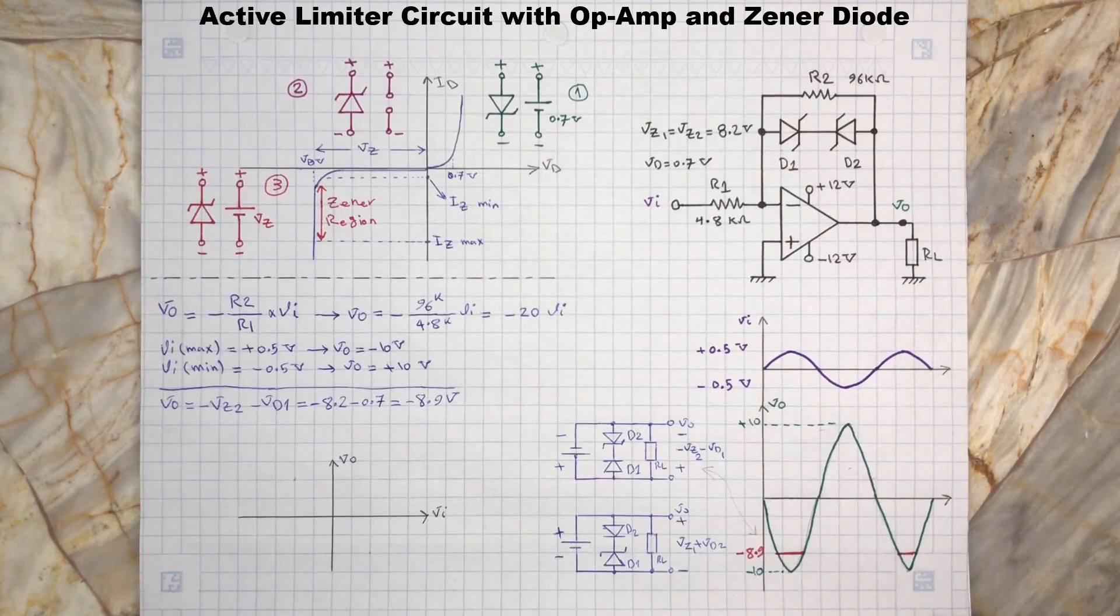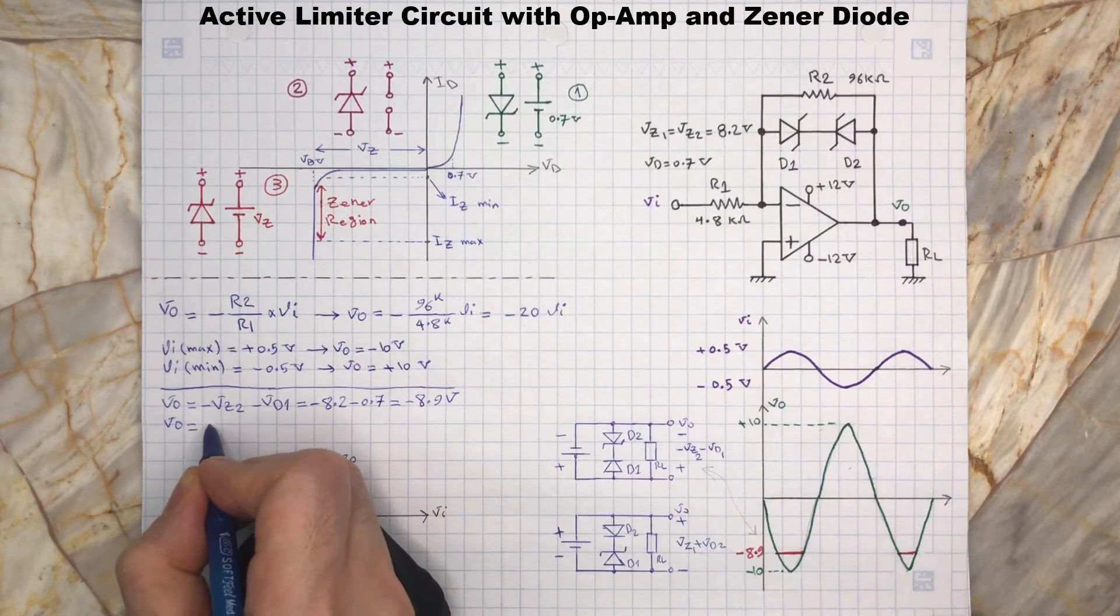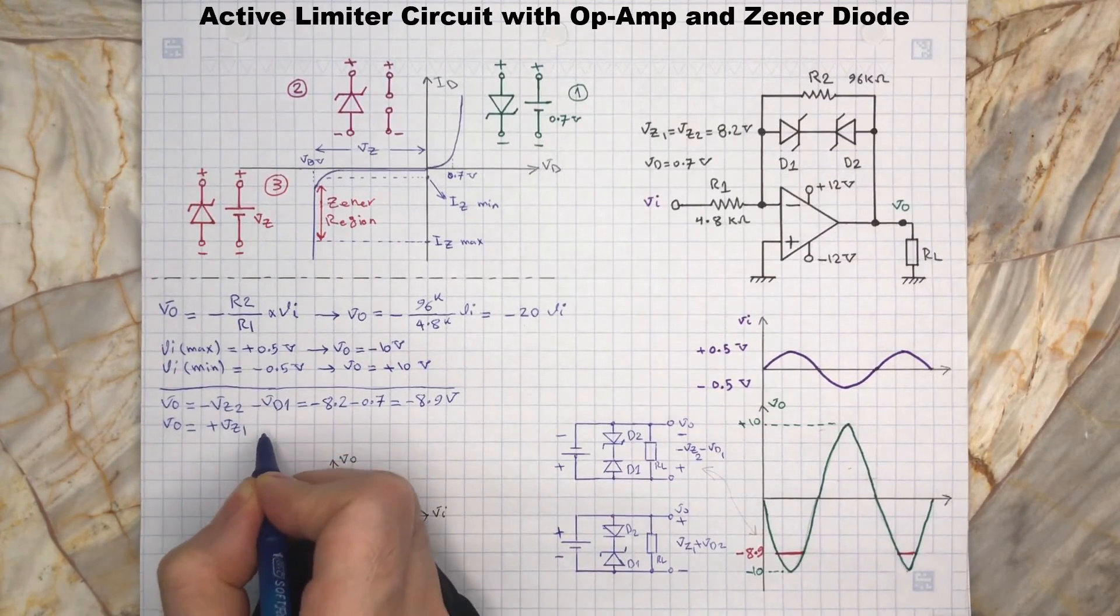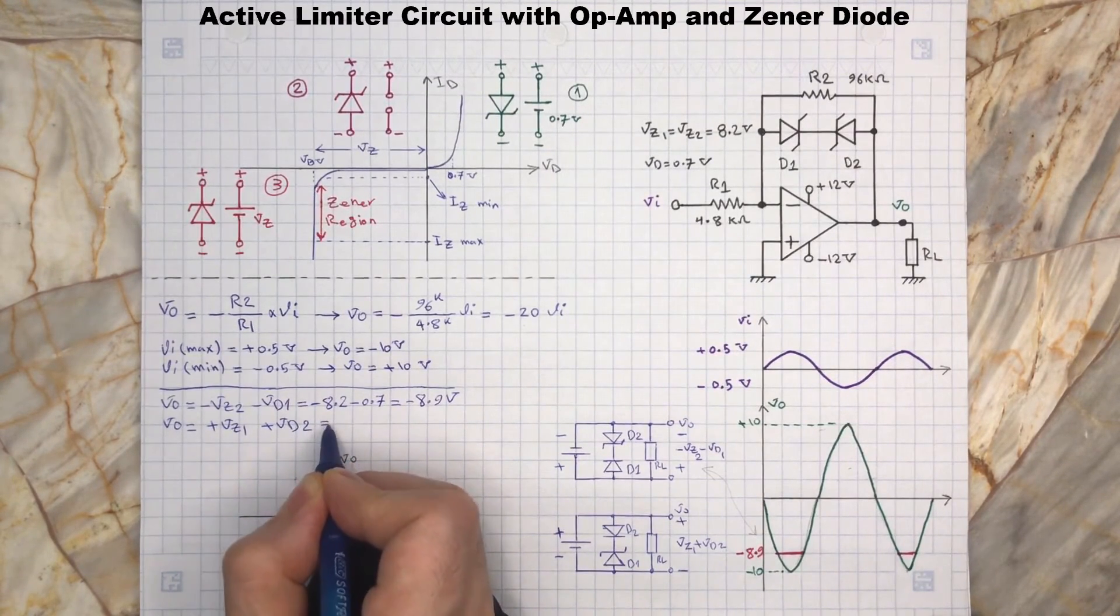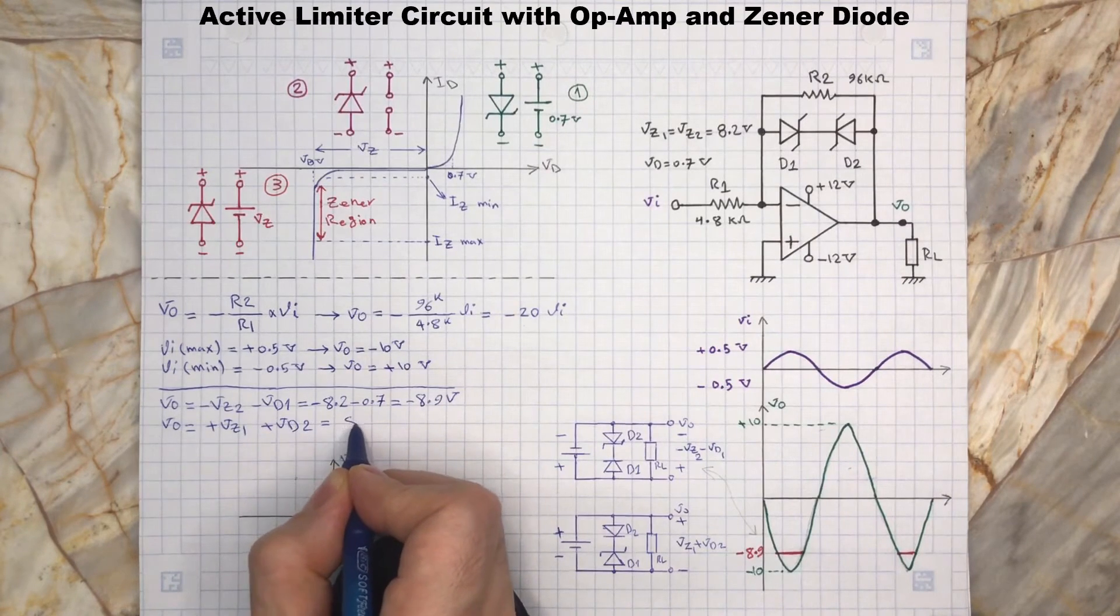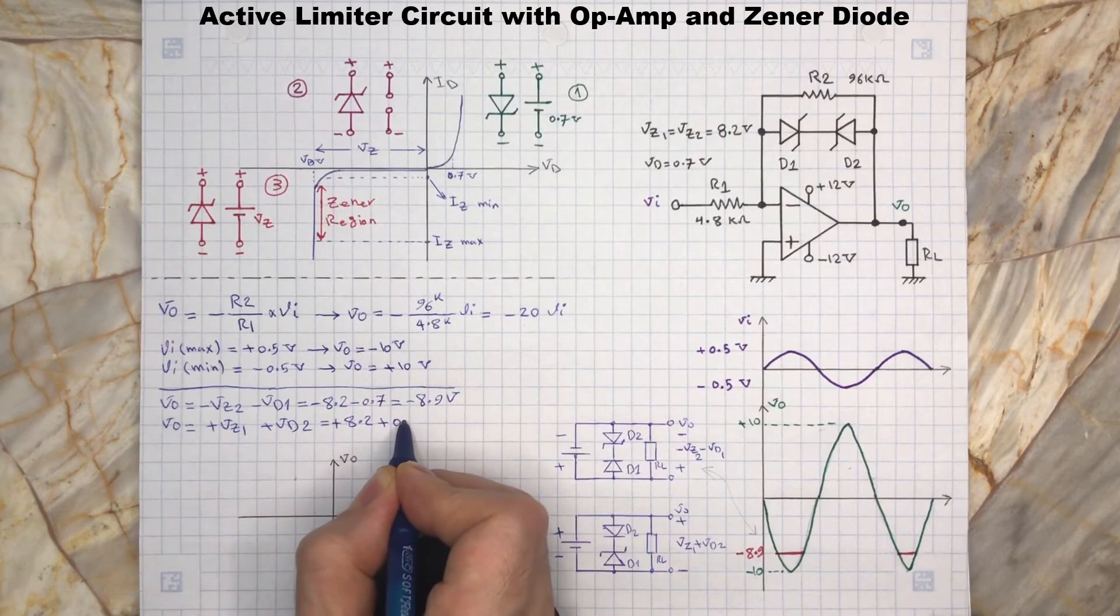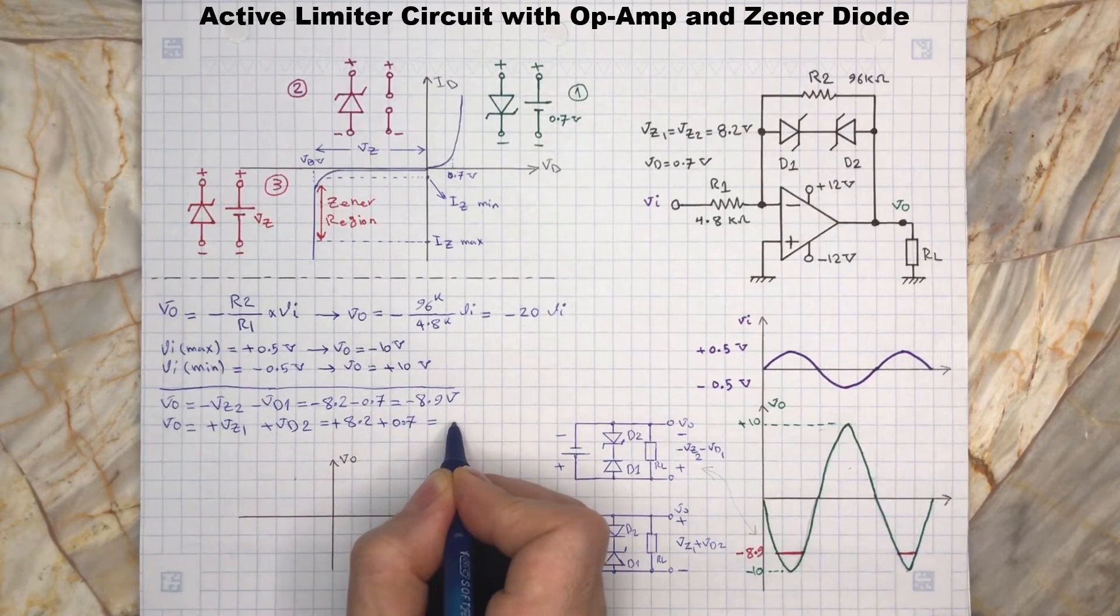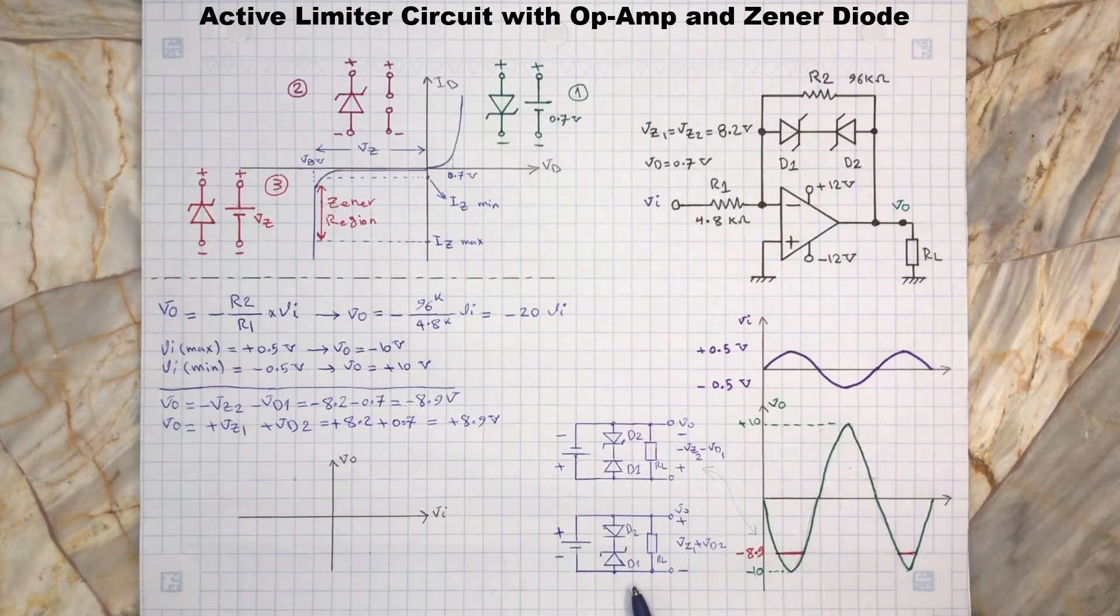This will put D1 in reverse bias, knowing the anode of D1 is connected to the inverting terminal of the op-amp, which is virtually grounded. Let's write the output expression for this condition. Here is the simplified circuit for this condition.